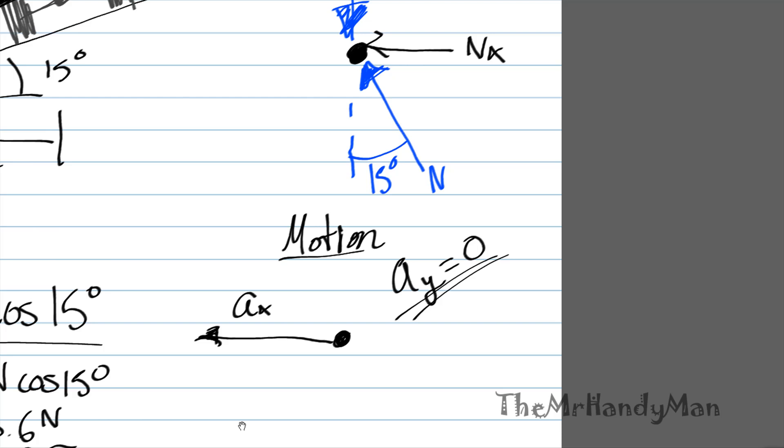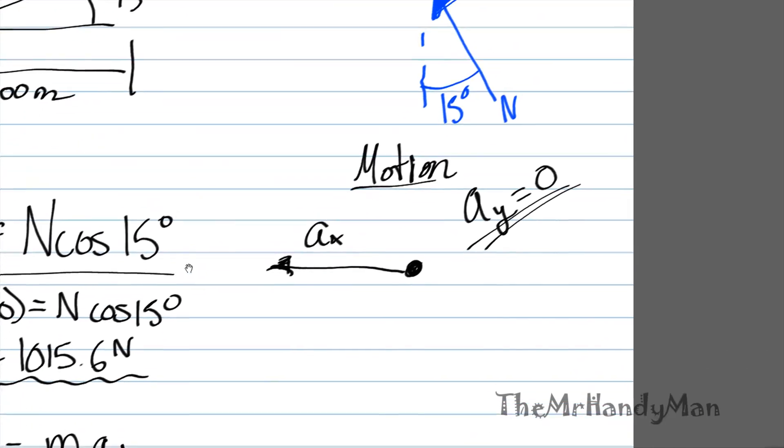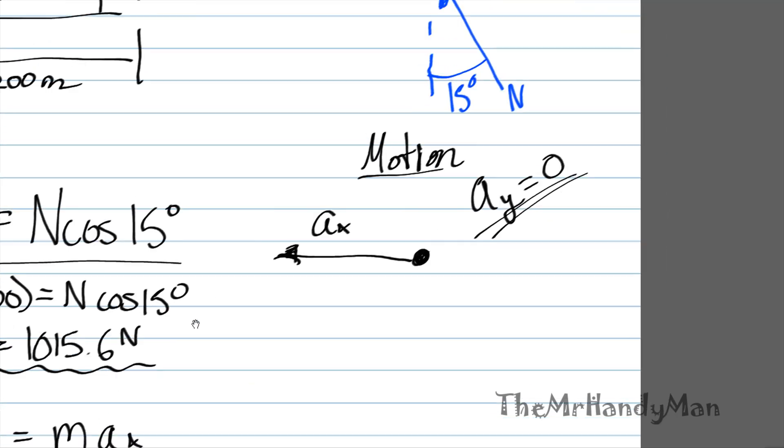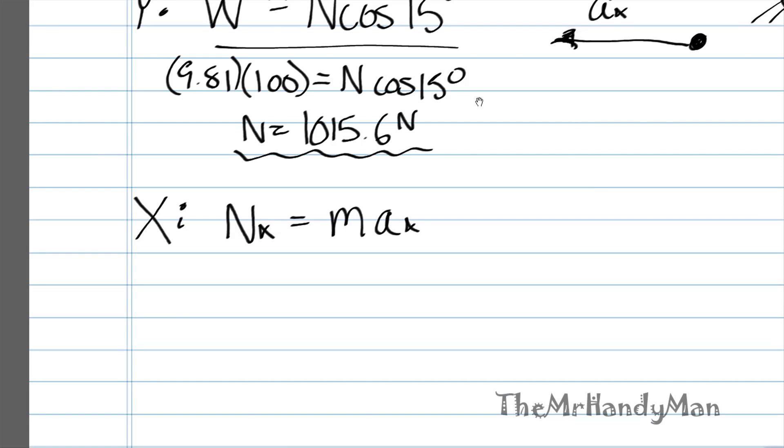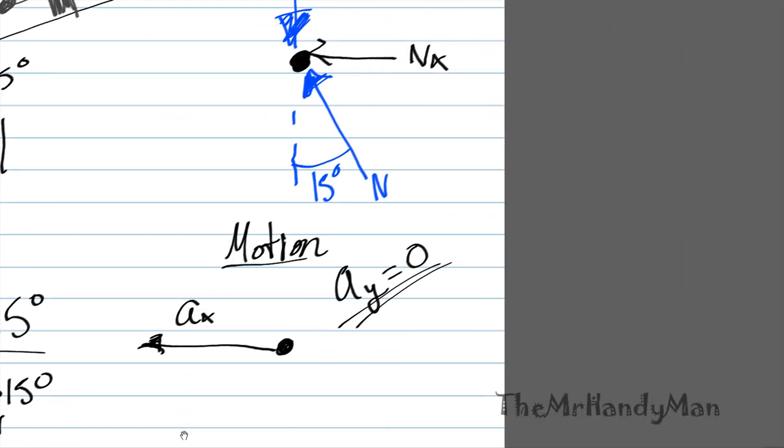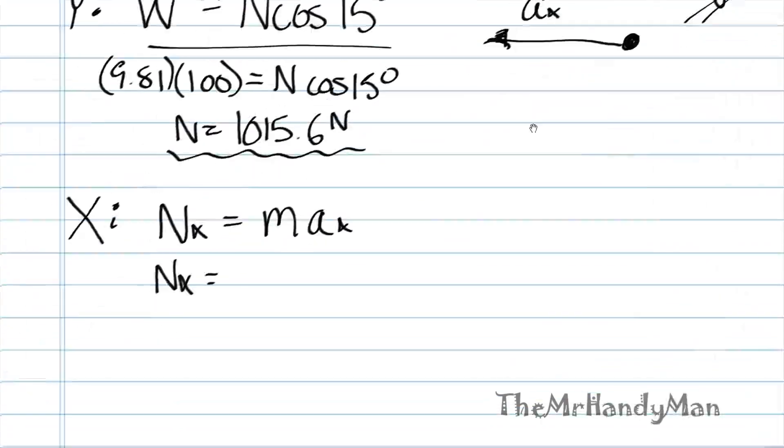Thus, you know that NX must equal mass times that acceleration. And actually, if we kept the directions, this would actually be negative NX equals M times a negative AX. If we were saying to the left is negative, but negative on both sides, I'm just saying that they're equal to each other. You can tell that they're going in the same direction, both to the left. So, NX equals M AX. Well, NX is equal to what I'm going to call just what looks to be N times sine of 15, which equals 262.86 newtons.